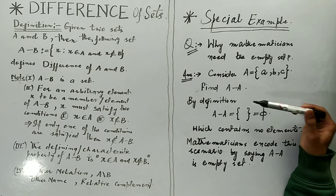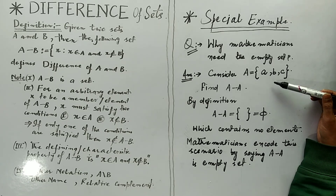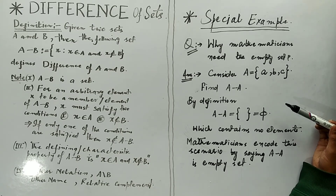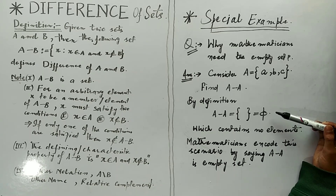Similarly, B would be included in A minus A only if B belongs to A and B does not belong to A — which is not possible. So B is not going to land in A minus A. Similarly, C is also not going to land in A minus A. Obviously A minus A contains nothing — it is an empty set, also known as the void set. Whenever such scenarios occur, mathematicians name this under the heading of the empty set. There is only one empty set, which is why we use 'the empty set.'